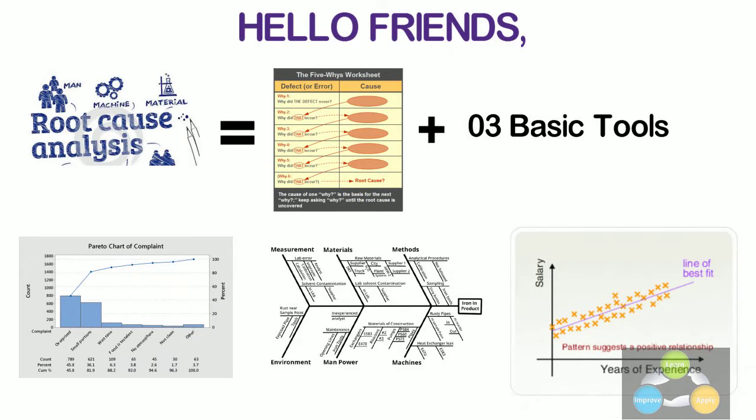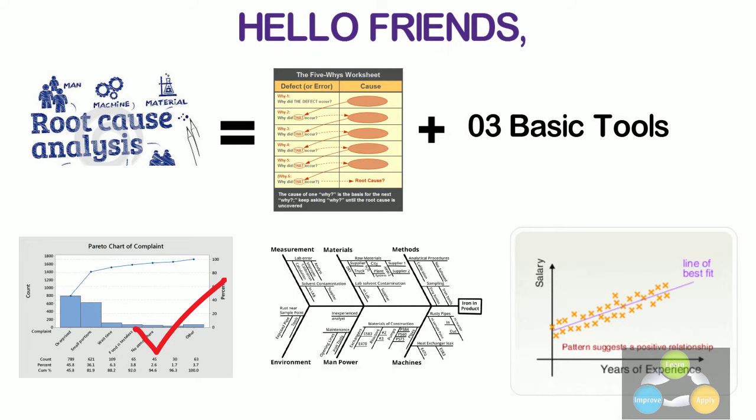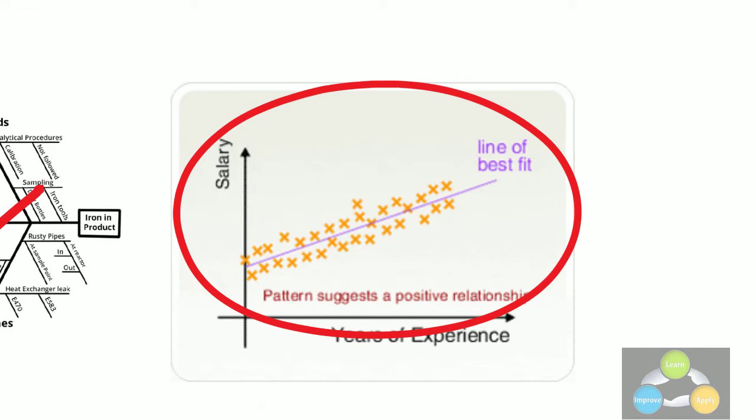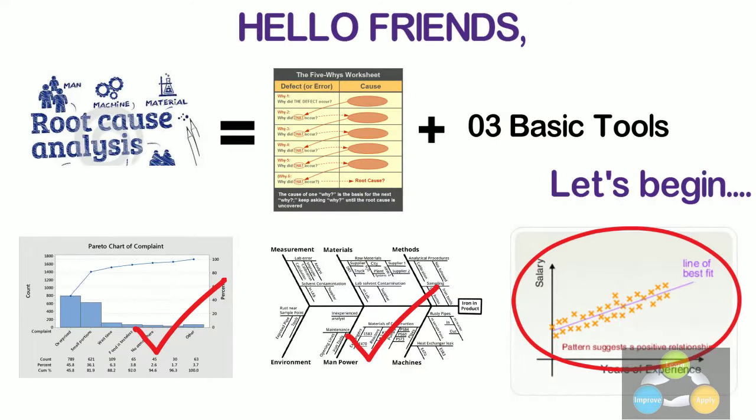It graphs pairs of numerical data with one variable on each axis to help you look for a relationship. You had already seen Pareto chart and Fishbone diagram in my last two videos in very detail. In this video, I am going to explain the third basic tool that is scatter diagram in detail. So let's begin.